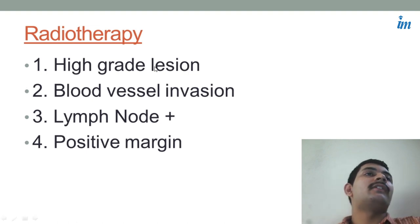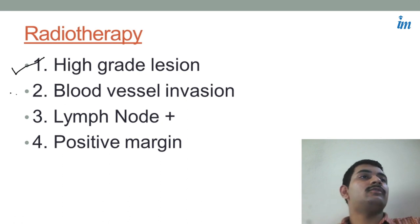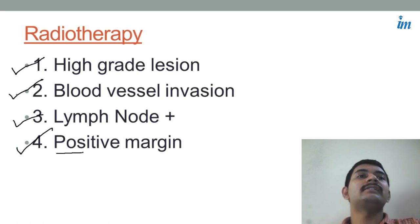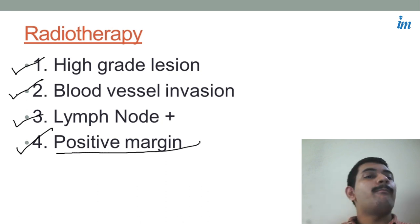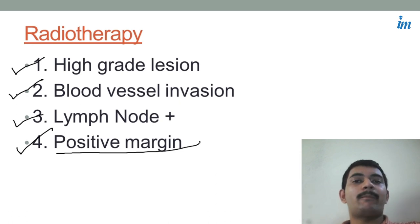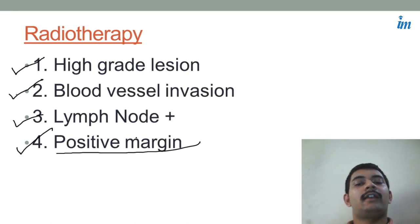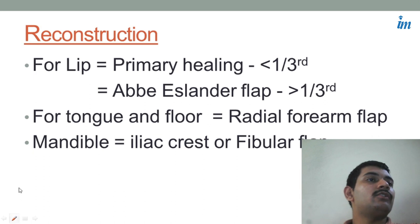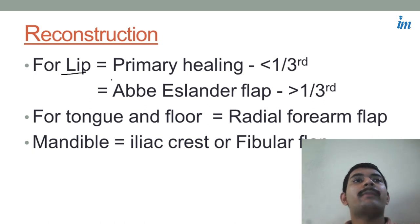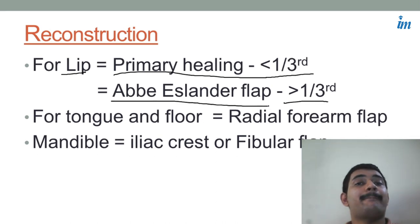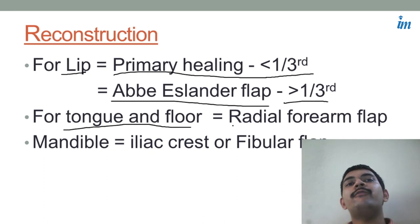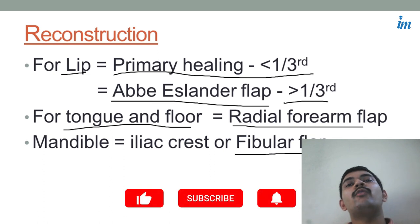Radiotherapy is given in four indications: high-grade lesion on histopathology, blood vessel invasion, non-resectable tumor, lymph node positive, and positive margins. Positive margin means after doing the wide excision, the borders of the specimen sent to histopathology should show negative margins — but if they are found positive, you need to give radiotherapy. For reconstruction: for the lip, if less than one-third is involved, go for primary healing by suturing; if more than one-third is involved, use a Karapandzic or Abbe-Estlander flap. For tongue and floor of mouth, use a radial forearm flap, and for the mandible, preferably a fibular flap.